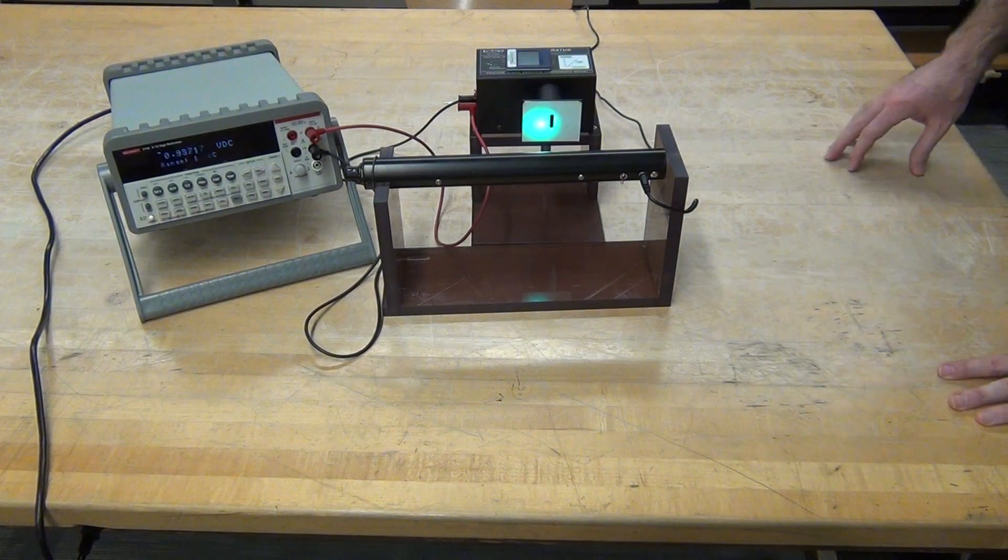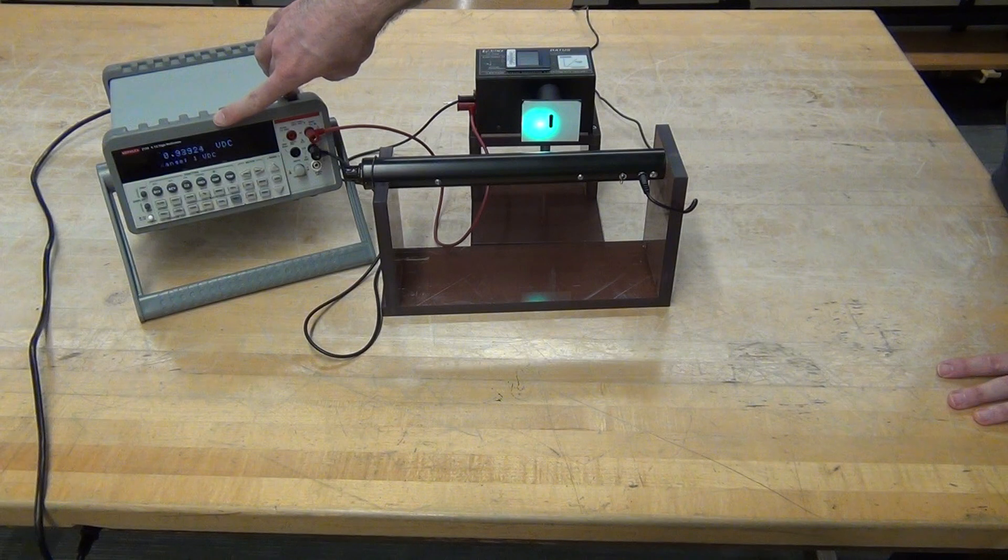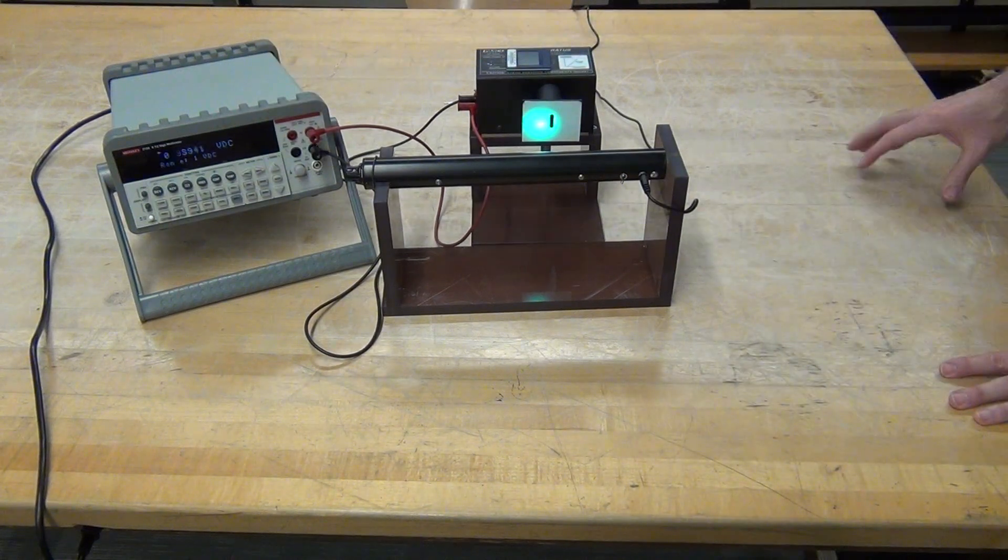And then when you release that, the stopping voltage will be measured on the Keithley. You'll wait for that to stabilize out to the third decimal place, so a single millivolt.